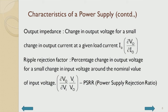Output impedance is the change in output voltage for a small change in output current at a given load current. Ripple rejection factor is the percentage change in output voltage for a small change in input voltage around the nominal input value — ΔV_out/ΔVI × VI/V_out — which is the power supply rejection ratio, expressed as 20 log of that ratio in decibels. This should be very small.